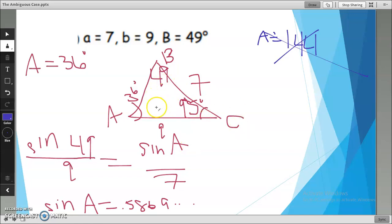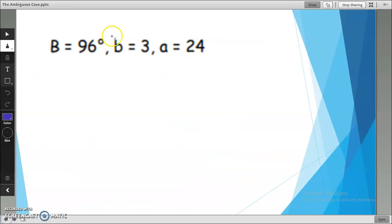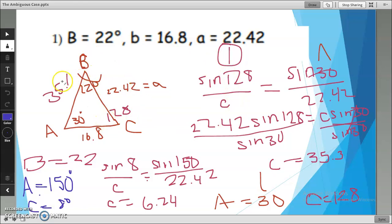Only thing left to do is to find side c. I put sine of 95 over c equals sine of 49 over 9, and we can cross multiply and solve. I get c equals 11.86, so I'll say 11.9. This only has one solution because the second one didn't pan out. So this has one solution, this had no solutions, and this one had two solutions. I hope this helps.